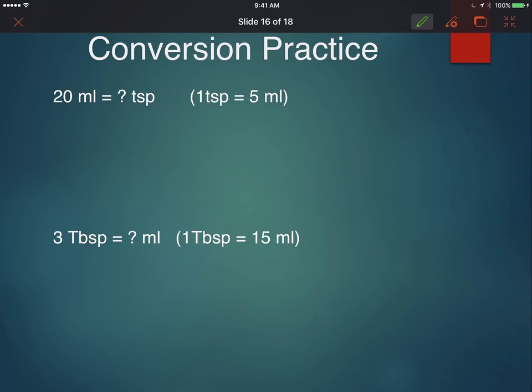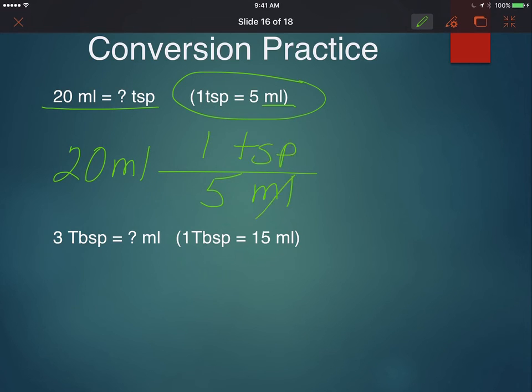Let's practice. The first one is asking 20 mils is how many teaspoons. I've given you the conversion here. I'm going to do it this way: 20 mils. I know that if I put mils on the bottom, I can cancel out my units. Five mils is equivalent to one teaspoon. Cancel, cancel. 20 divided by five equals four and our units are in teaspoons.